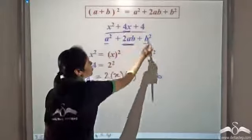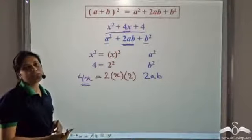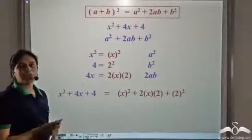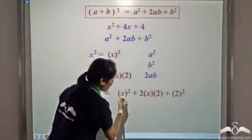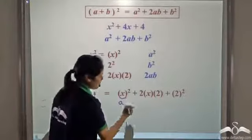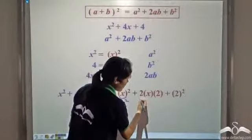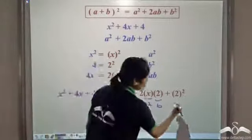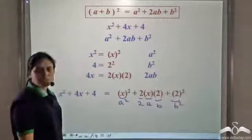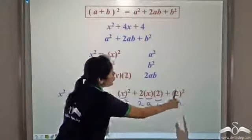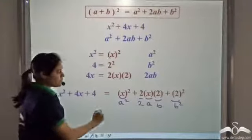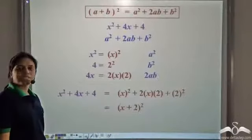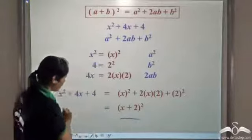So this expression can be written in the form a² + 2ab + b². We write it as x² + 2·x·2 + 2², where x is a and 2 is b. Since a² + 2ab + b² = (a + b)², we can write it as (x + 2)². This is the factorized form of the expression.